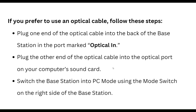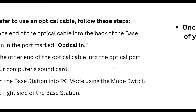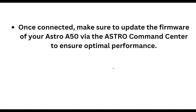If you prefer to use an optical cable, follow these steps. Plug one end of your optical cable into the back of the base station in the port marked optical in. Plug the other end of your optical cable into the optical port on your computer sound card. Switch the base station into PC mode using the mode switch on the right side of the base station. Once the connection is made, make sure to update the firmware of your Astro A50 via the Astro Command Center to ensure optimal performance.